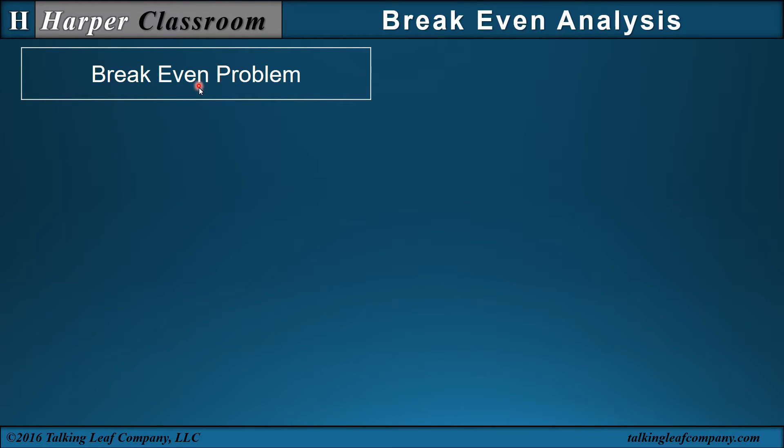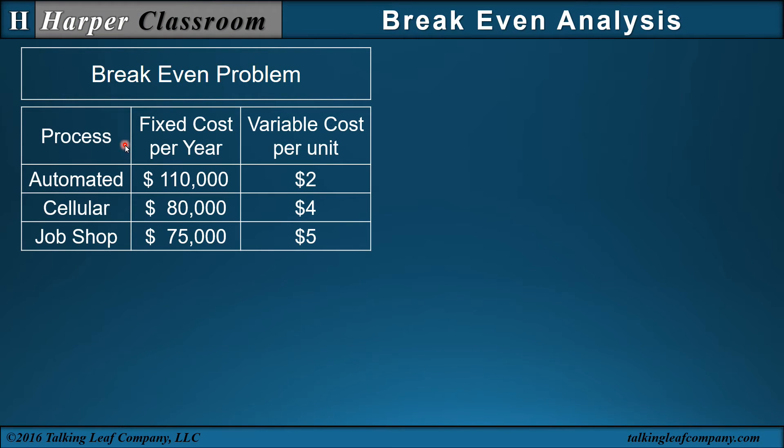I will define the break-even problem to be a company is deciding which process to select for their operations: automated, cellular, or job shop. One criteria is cost, so they've identified the fixed cost per year and the variable cost per unit of production.